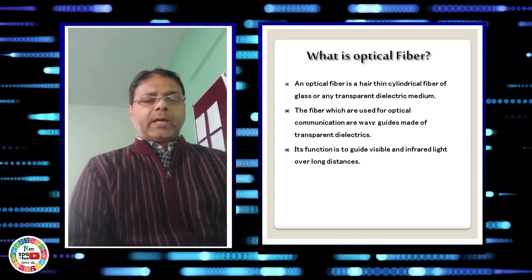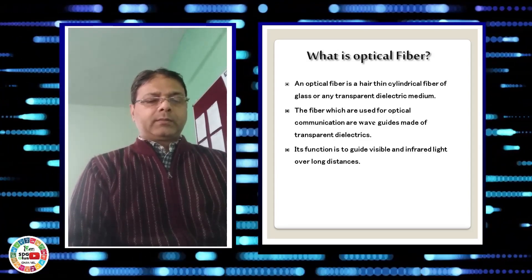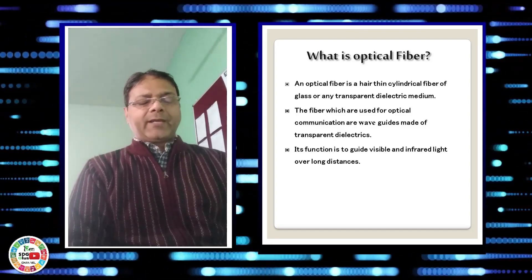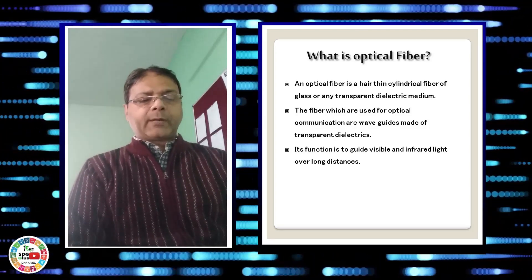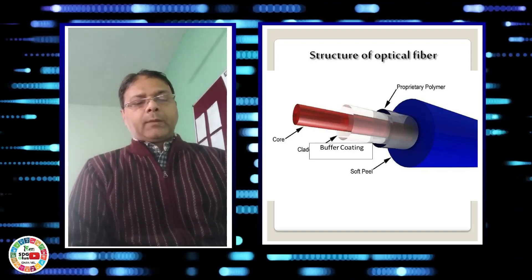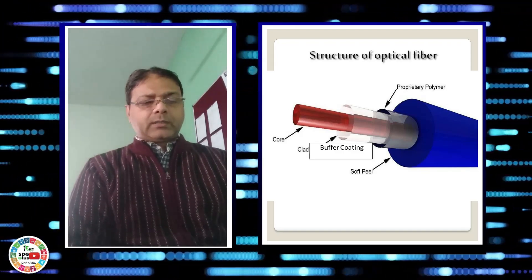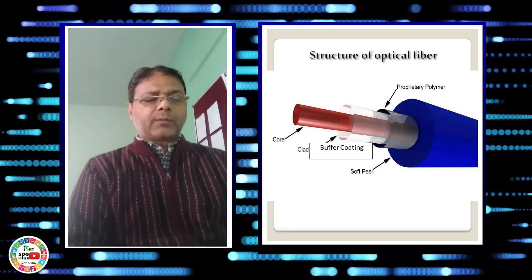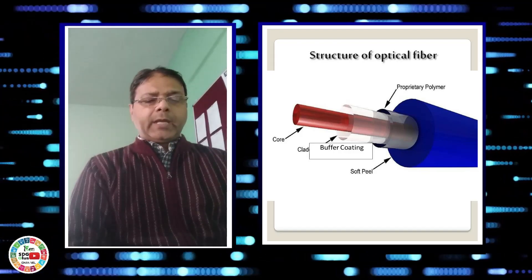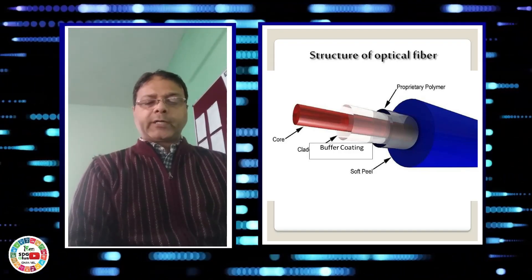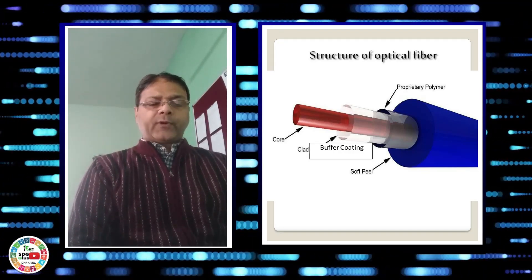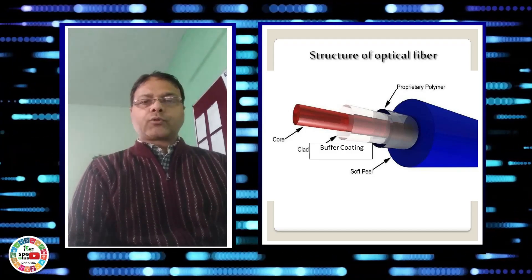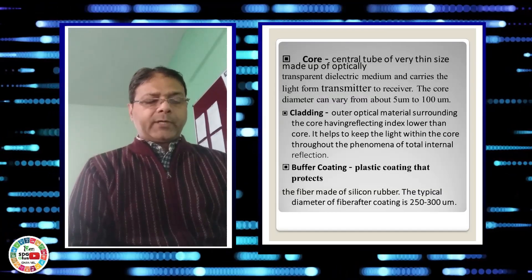Fiber means threads and optical means light. It is a system through which light transfers through the fibers. The fibers are made up of very thin plastic or glass insulating mediums or dielectric mediums. The thickness of fiber is almost equal to human hair and made up of dielectric or insulating medium which we obtain from silica, and silica is available from sand and sand is available in huge quantity.